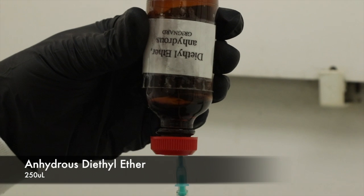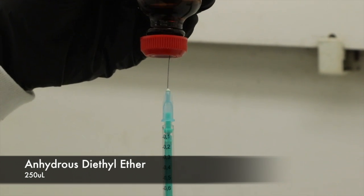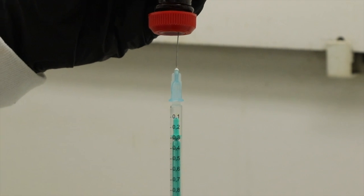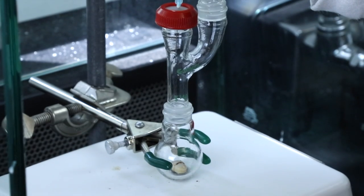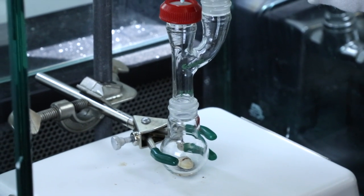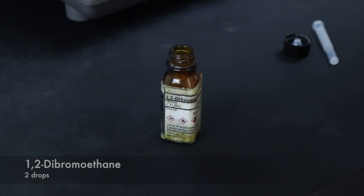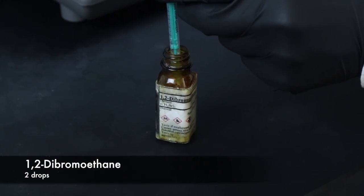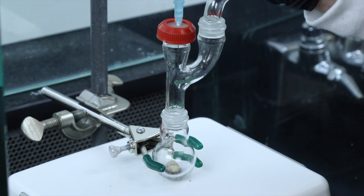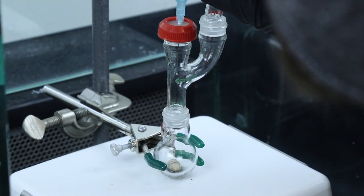Then I'll add 250 microliters of anhydrous diethyl ether, which is dry diethyl ether, since we're being careful of not having water contamination. And I'll add that through the septum into the flask. Two drops of dibromoethane are now added to react with the surface of the magnesium, and we'll watch for the small bubbles a little bit later.